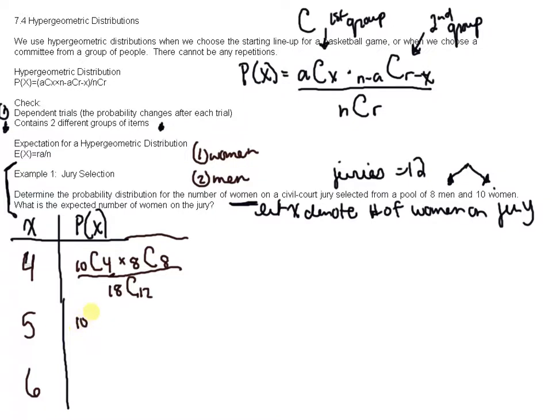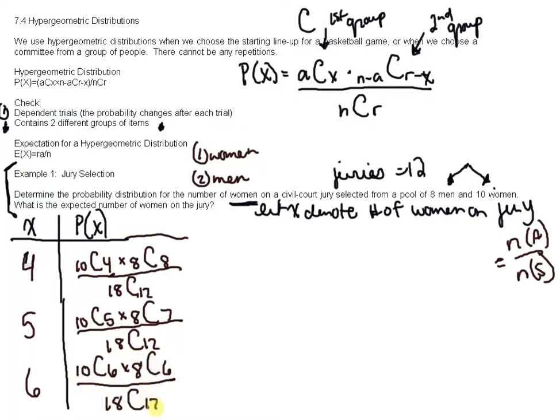Now choosing five women, there are ten women, we're going to choose five. There are eight men, we're going to choose seven. And there are 18 people and we're choosing 12. Remember that's the total. We went over this when we did the number of event A over the number of occurrences in the universal set. Now, six women on the jury, there are ten women, we're going to choose six. There are eight men, we're going to choose therefore six, and there are 18 people and we're going to choose 12.